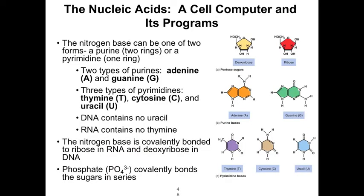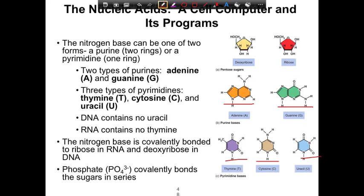The nitrogenous base can be either a purine, made of two rings, or a pyrimidine, made of one ring. There are two purines — adenine and guanine — and two pyrimidines — thymine and cytosine — as well as uracil, which appears in RNA. To keep these straight, I use the rule of Y: pyrimidines has a Y in it, as do thymine and cytosine. Purines don't have any Ys. Also, purine is a short word but has the large two-ring structure, while pyrimidine is a longer word but has the smaller one-ring structure.